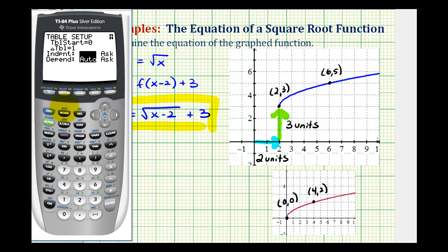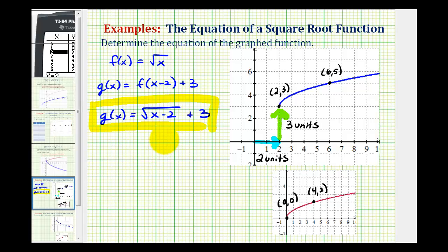And now we'll go back to the table, second graph. And now we can see that the point two, three, as well as the point six, five is on our function. Which should be enough information to verify that we identified the equation of this function correctly.